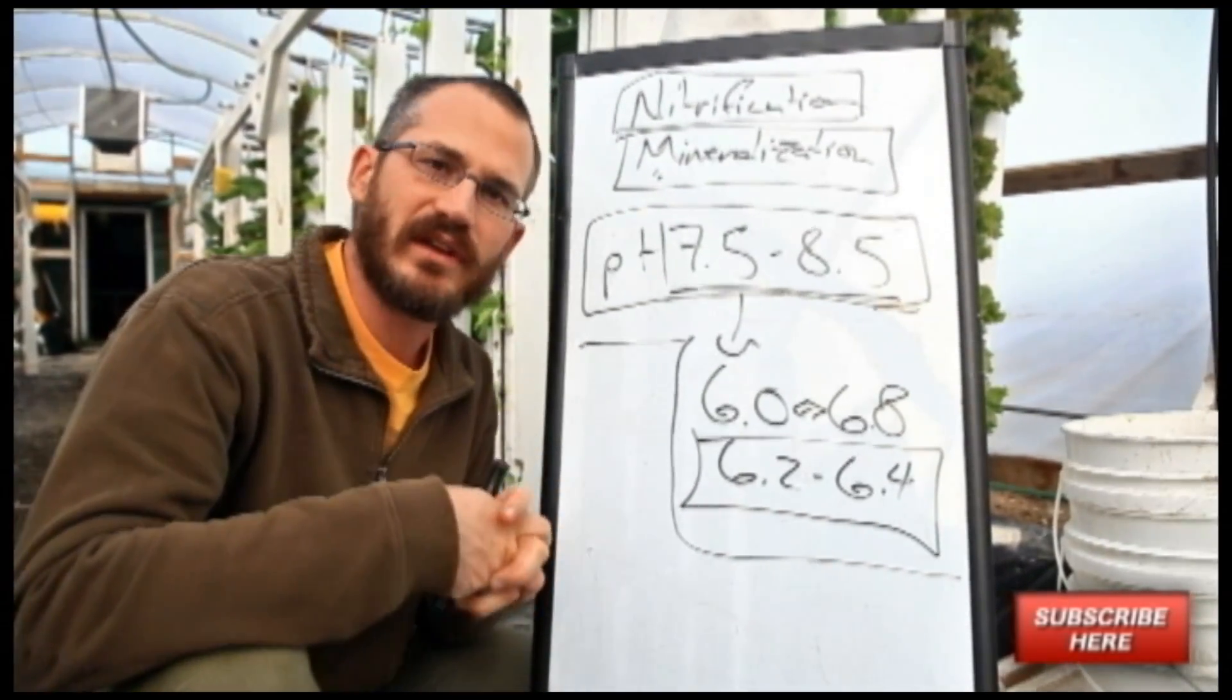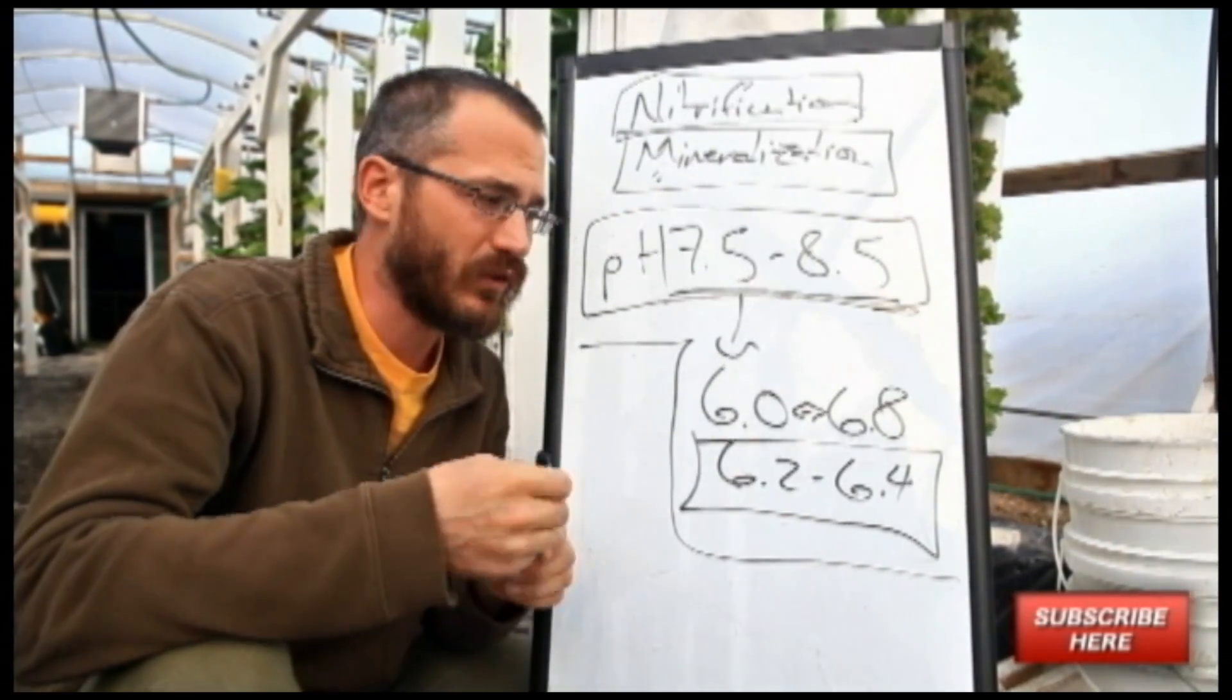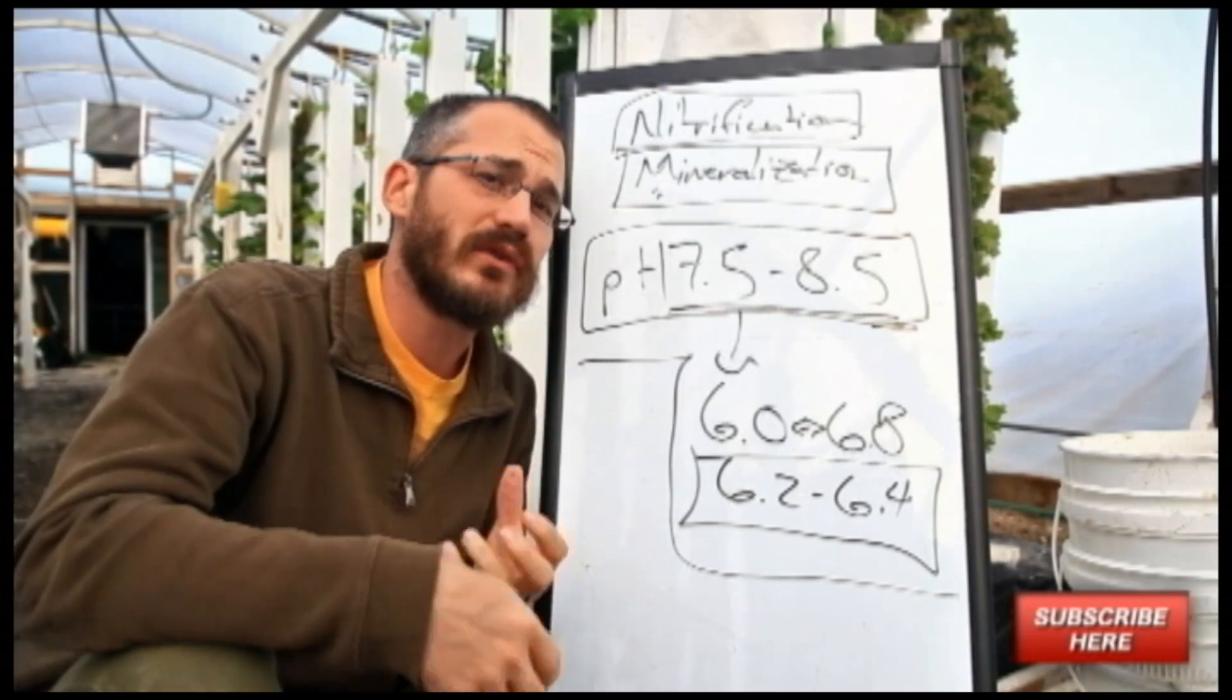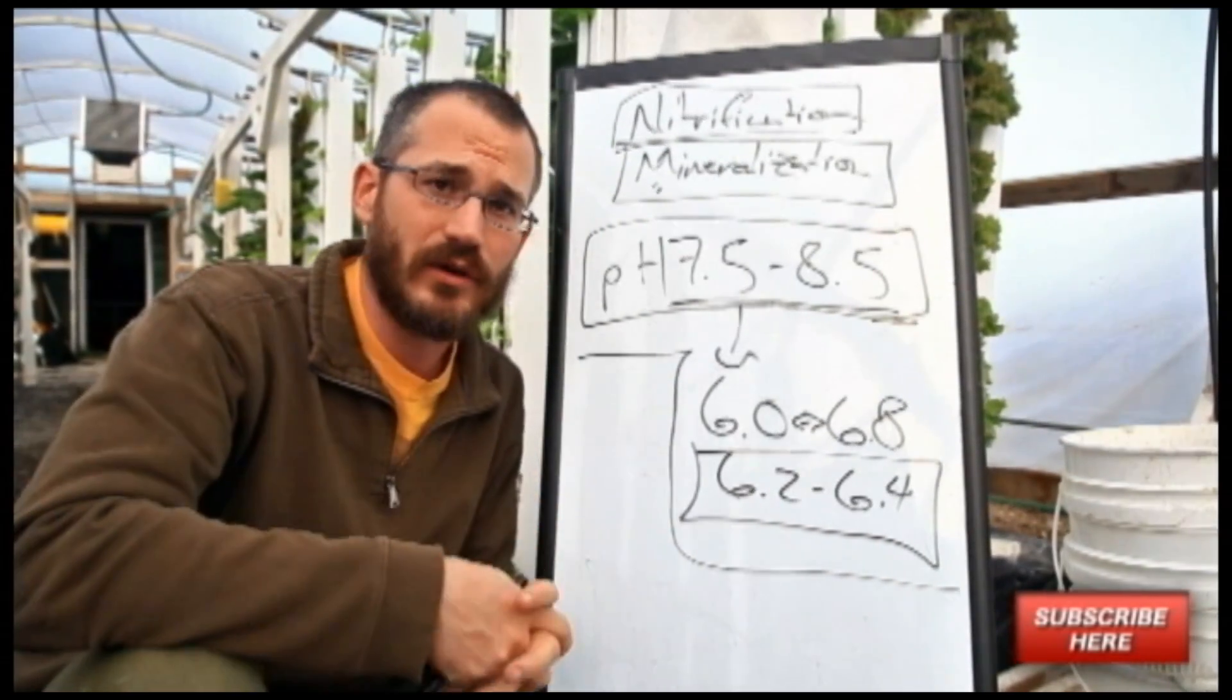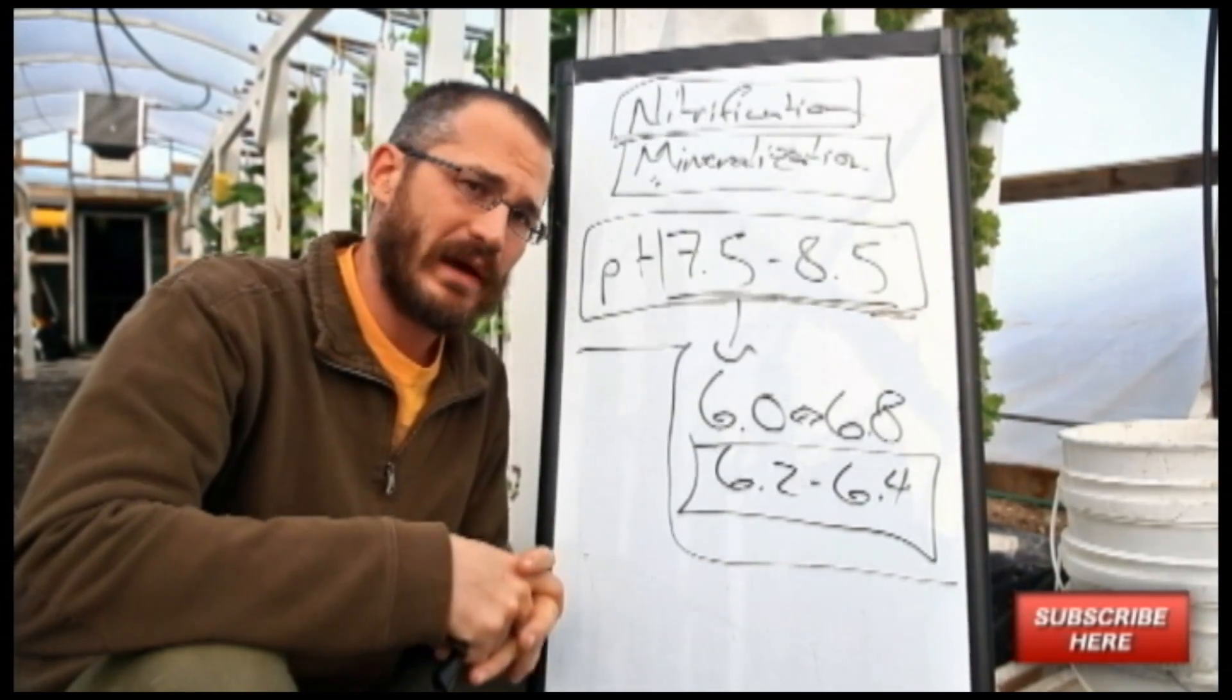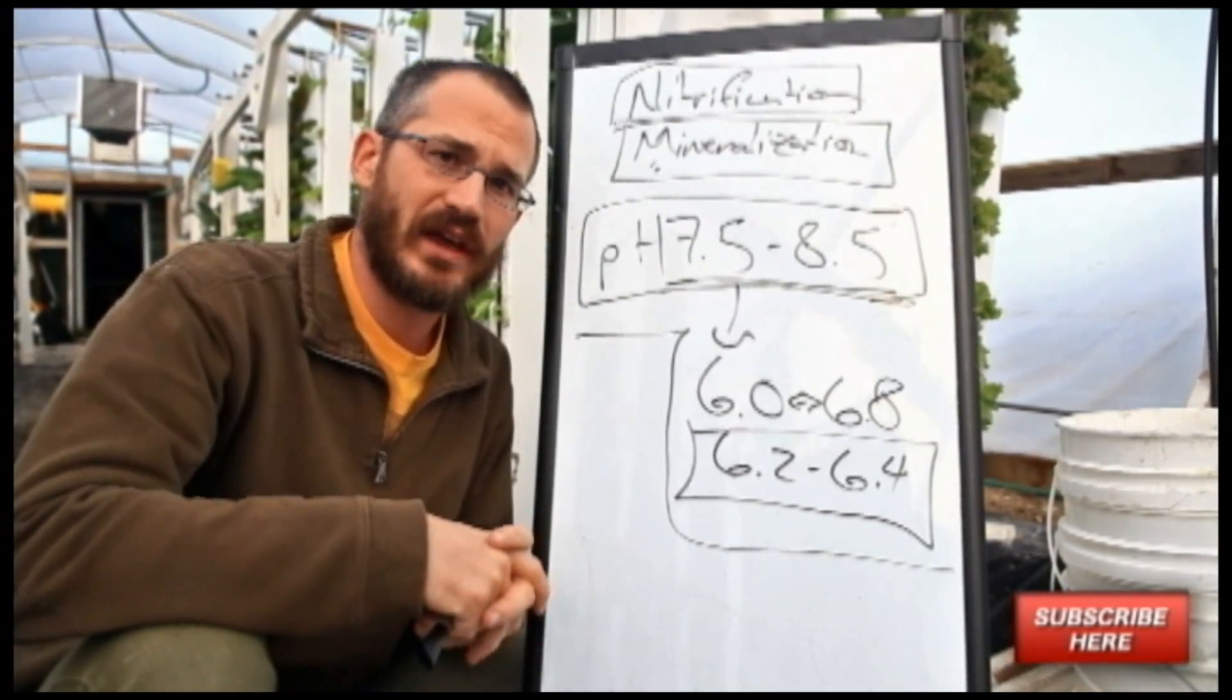They're very, very sensitive to UV light. Almost all nitrifiers are wimps when it comes to UV light. So if you go through and you stir up your gravel bed or you stir up your media bed or expose your media to light, then expect to see a drop in your nitrification activity.